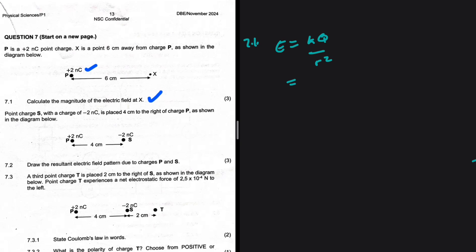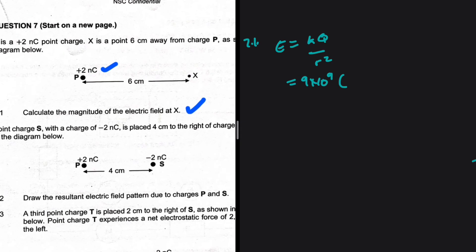k is 9 times 10 to the power 9 — it's a constant, but because I'm writing the final exam I'll verify on the formula sheet. It is plus 9, so 9 times 10 to the power 9, multiplied by the charge of P which is 2 times 10 to the minus 9 — not minus 6 — divided by r squared. r is in centimeters so we convert to meters: divide by 100 and square that.